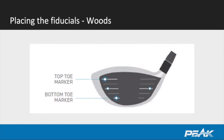One of the things we've started doing within the last two years, as the prevalence of asymmetrical driver faces has really grown, is pulling these fiducials in a little bit closer to the striking area on the club face. What that does is help eliminate some of the twist from the twist face and give us a better characterization of what's happening in that center portion of the golf club.